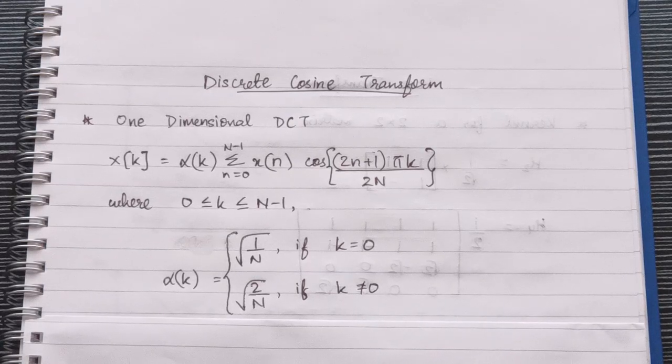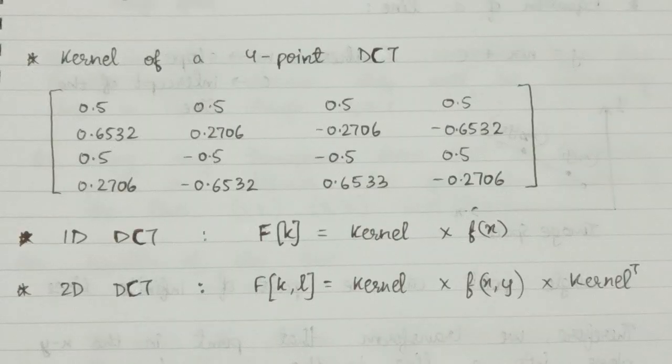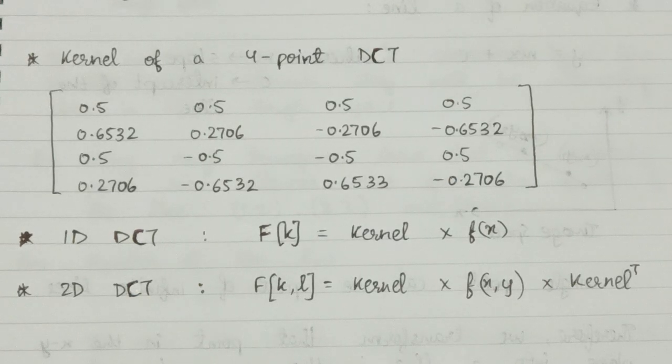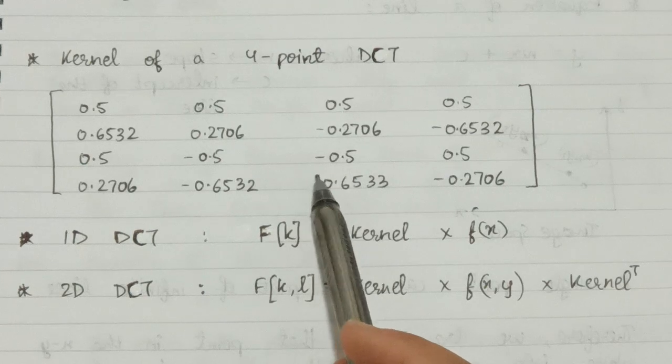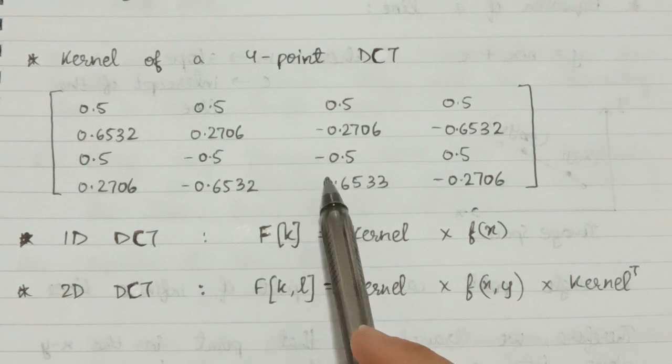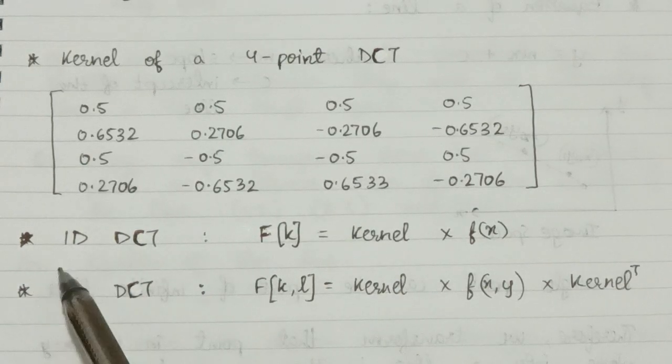Before moving ahead with the questions, let's look at the basis or kernel for a four-point DCT. If you have a four-point sequence, this is the kernel for it—a four by four matrix.